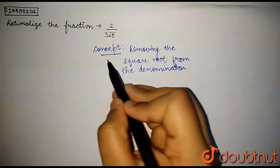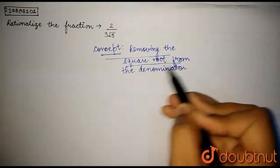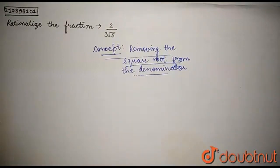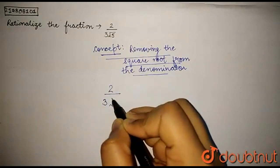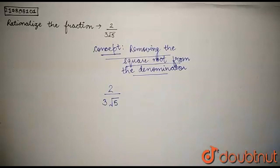So this is the basic concept we're going to use in this question. Rationalizing a fraction means removing the square root from the denominator. Now let us observe the fraction, which is 2 upon 3 root 5. In order to remove the square root from the fraction,